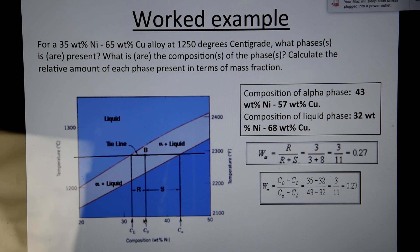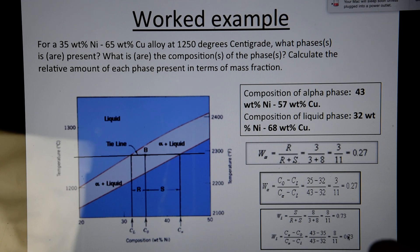OK, which is R plus S. And that gives you the same value of 0.27. Now to find the composition of liquid, sorry, the weight percentage of liquid, that's going to be S over R plus S. And that's the same as C alpha minus C0 over C alpha minus CL. And that gives approximately 0.73%.